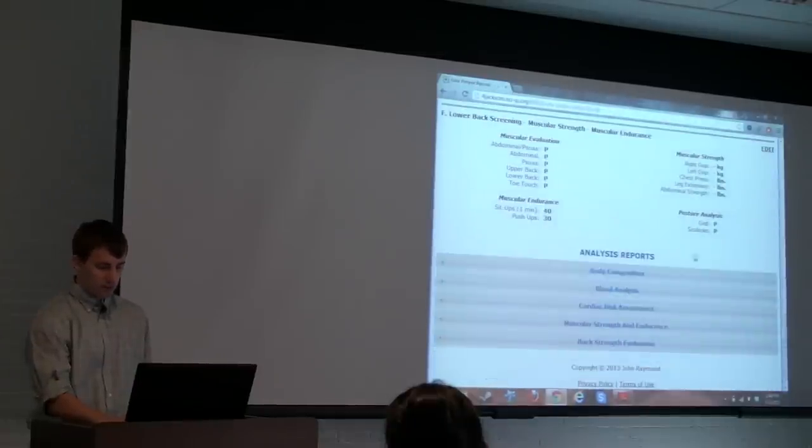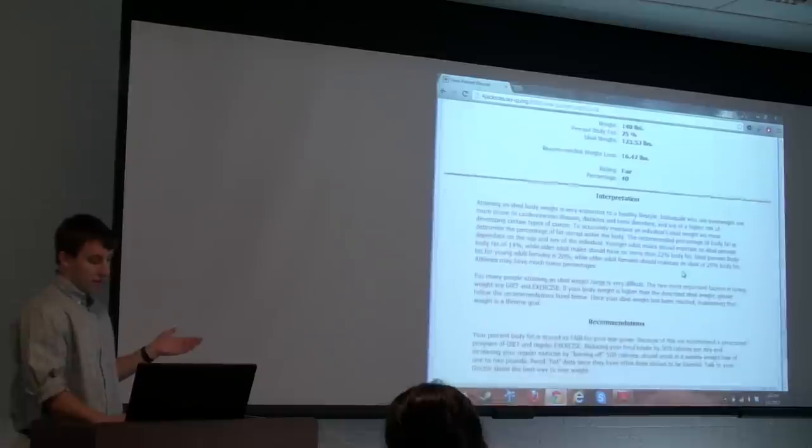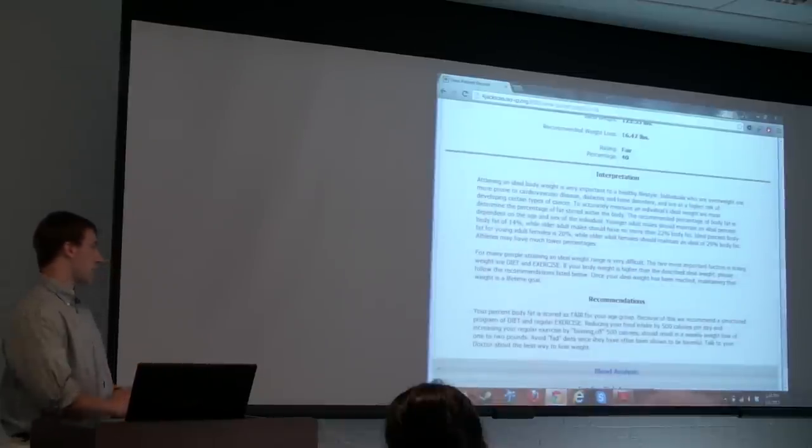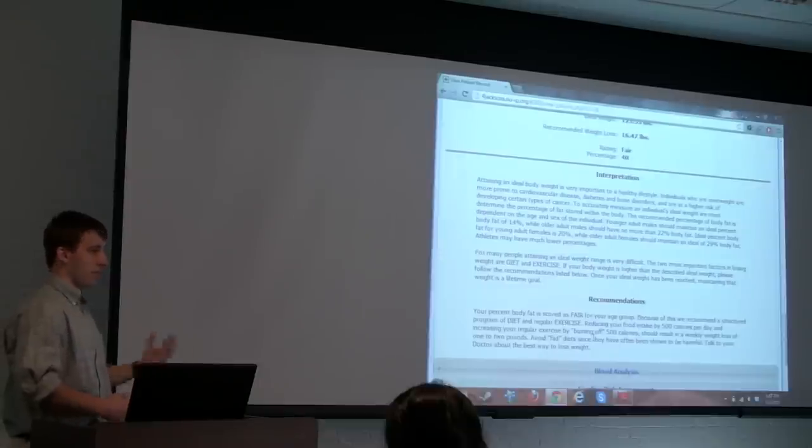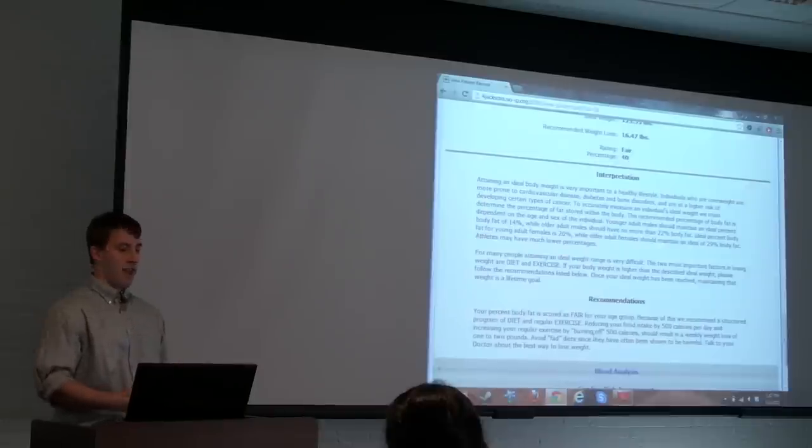We'll scroll down to the analysis reports, open body composition, and he has a rating of fair. If you look at the recommendations, it's actually changed out, so now it tells him that he should start reducing food intake by 500 calories and also exercise more to burn another 500 calories. So that's pretty much the main points of the application: you add patients, you edit parts of them, and you print out this fitness report.